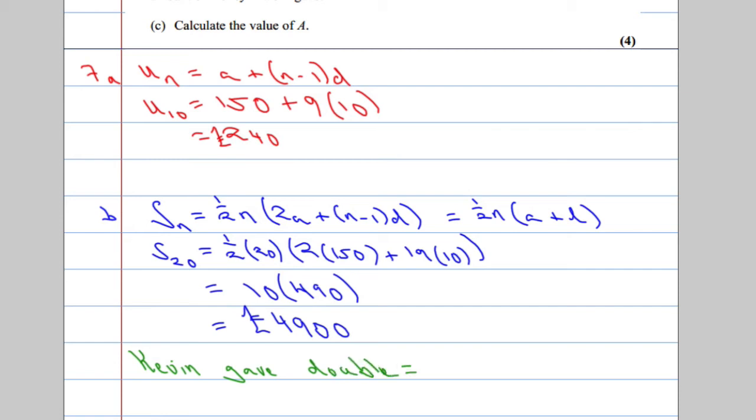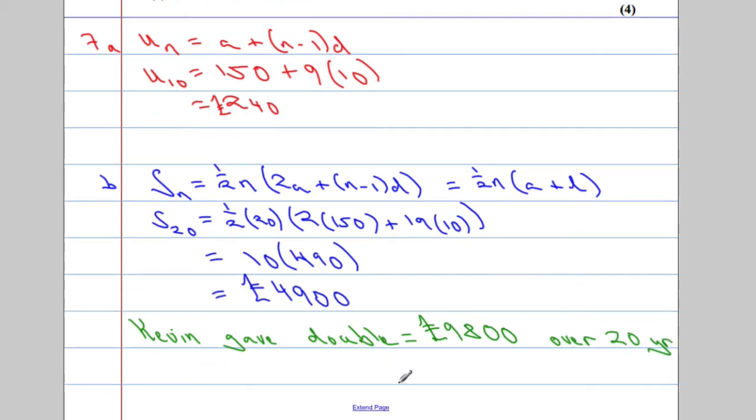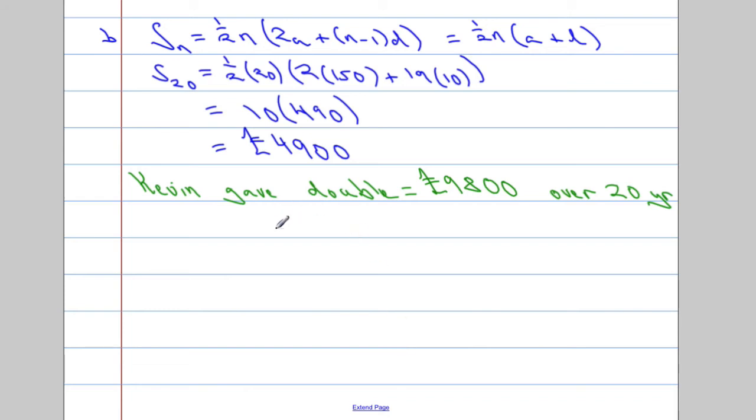Which is going to equal, well, what's double 4,900? Got to be 9,800. So Kevin gives that much over a 20-year period. So over 20 years. We want to find out what his original amount was. So we're going to use the same formula again.